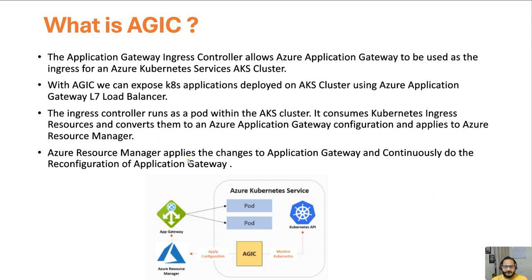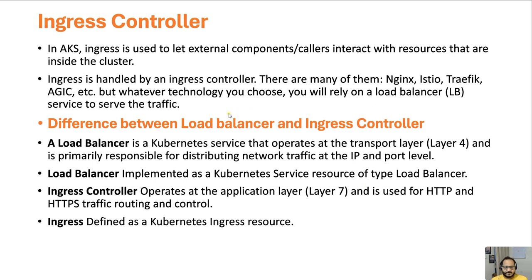Azure Resource Manager applies the changes to the Application Gateway and continuously reconfigures it. Whatever configuration changes you make on your pod or application, the AGIC pod will always monitor your resources through the API, apply the configuration to Azure Resource Manager, which applies it to App Gateway, and App Gateway will work accordingly. That's basically how AGIC works.